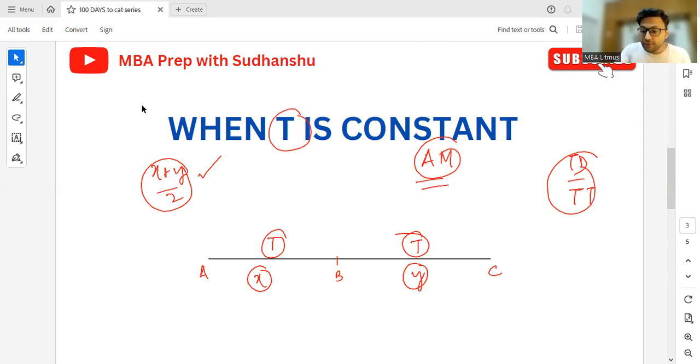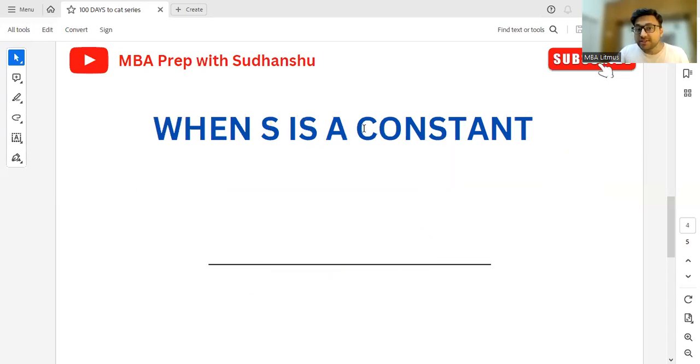Moving ahead to the last part, which is when speed is a constant. What will be the average speed when speed is a constant?